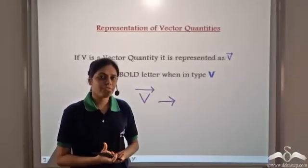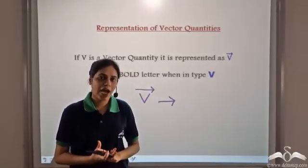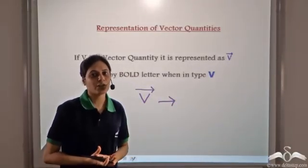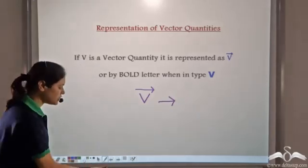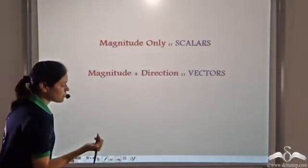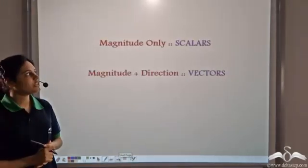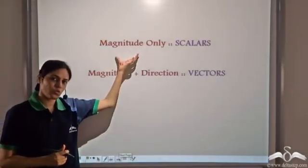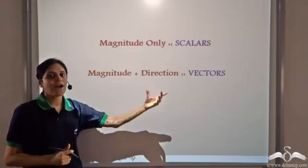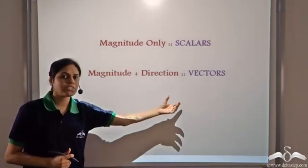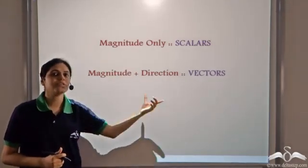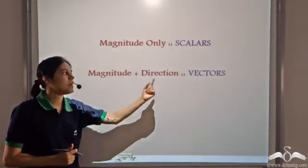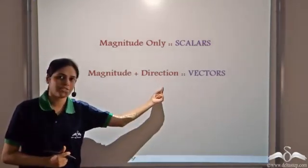Let me give you a quick recap: scalar quantities are the quantities which require magnitude only, and vector quantities are the quantities which require both magnitude and direction.